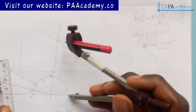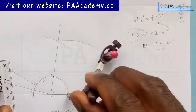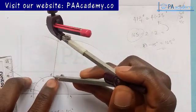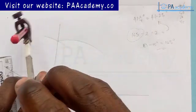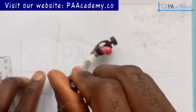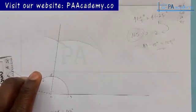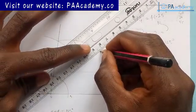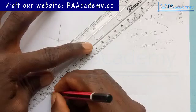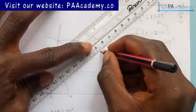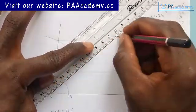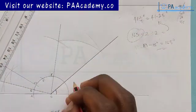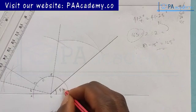Place it on point B. Draw an arc. With the same length, I'll come to point F. I'll draw an arc. So the point of intersection, which is right here, I'll join it to point O. And this right here is the angle that we are to construct, which is 41, 1 over 4 degrees.